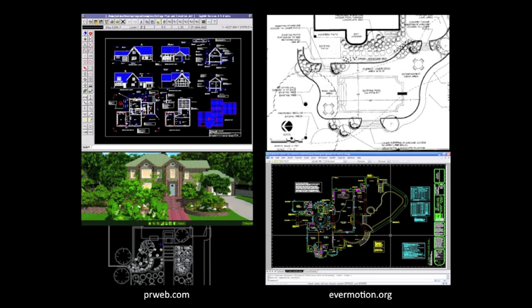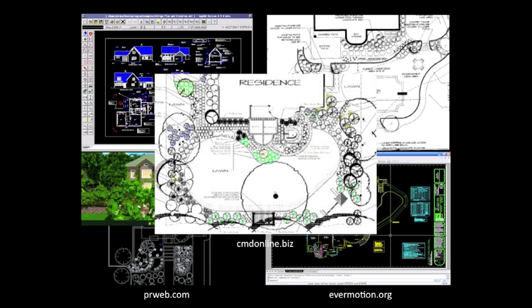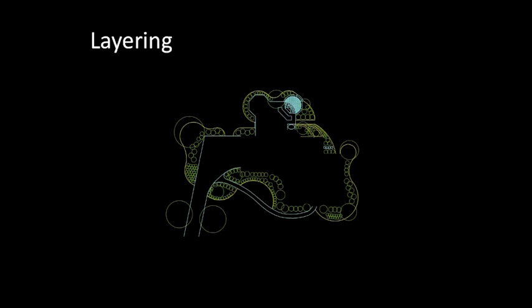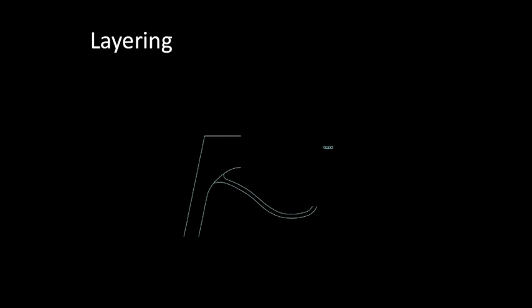Design ideas and client expectations are constantly changing, and with CAD software, plans and drawings can change just as quickly. There are numerous advantages to using CAD software in design. CAD's digital drawings replace paper blueprints and allow you to easily acquire information from a design, such as measurements, dimensions, and even materials used. CAD also makes use of layering, a tool used to organize design details into groups that can be hidden and displayed at will.